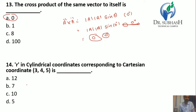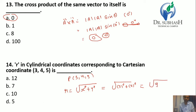Question 14: R in cylindrical coordinates corresponding to Cartesian coordinate (3, 4, 5) is — we use the formula R = √(x² + y²). Here x = 3 and y = 4, so R = √(9 + 16) = √25 = 5. So the answer is D: 5.